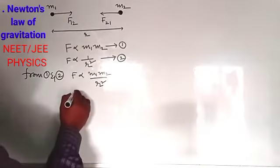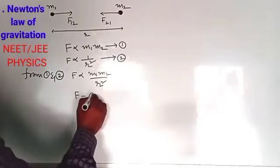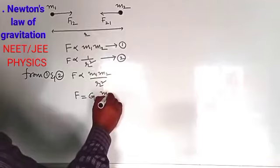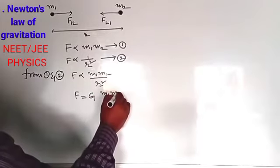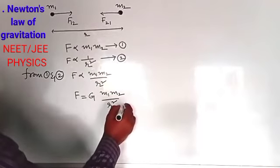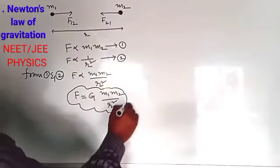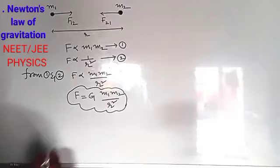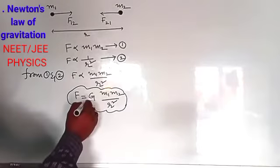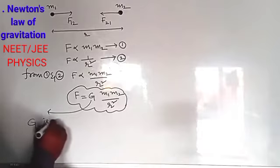From equations 1 and 2, we can write: the magnitude of force F is directly proportional to m1·m2 / r², and this force acts along the line joining the two masses. Since both are directly proportional, we can introduce one constant value. That constant value is G, giving us F = G·m1·m2 / r². Here, G is called the universal gravitational constant.